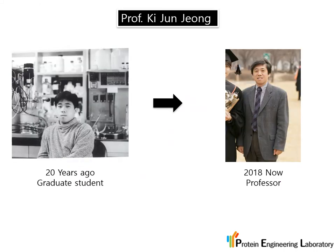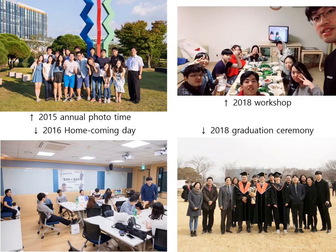Our lab professor is Ki-Joon Jung. He received his bachelor's, master's, and PhD from KAIST and stayed as a postdoctoral fellow at the University of Texas at Austin. In 2008, he came back to KAIST as assistant professor, and now he is a full professor. This concludes our presentation — thanks for listening.